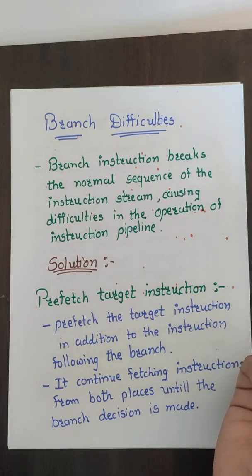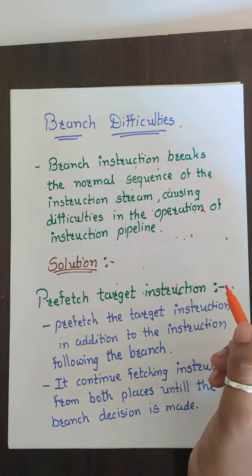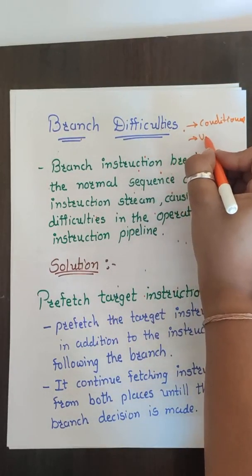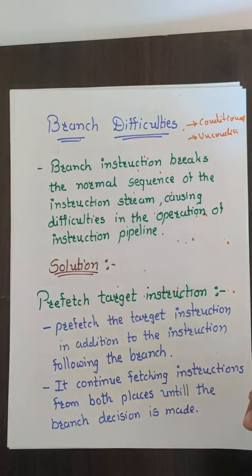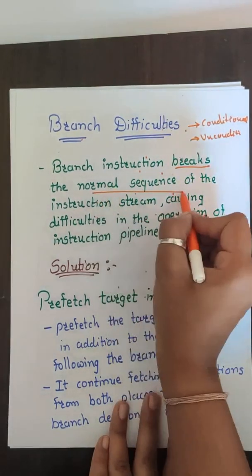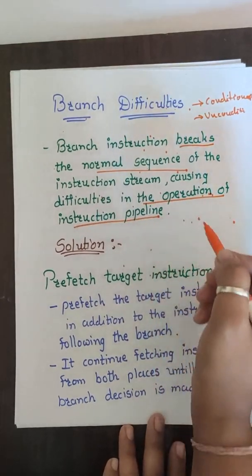Today we study the third conflict: branch difficulties. A major issue occurs whenever any branch instruction occurs. There are two types: conditional branch and unconditional branch. An unconditional branch always alters program flow by loading the program counter with the target address. In a conditional branch, the target instruction executes if the condition is satisfied; otherwise the next sequential instruction executes. A branch instruction breaks the normal instruction sequence, causing difficulty in pipeline operation.